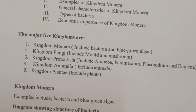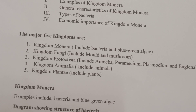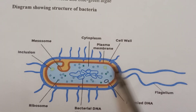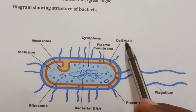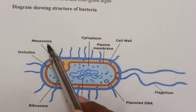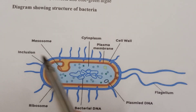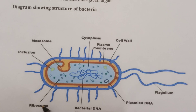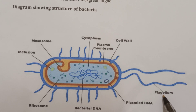Kingdom Monera — examples are bacteria and blue-green algae. This is a diagram showing bacteria. You can see the cytoplasm, the cell wall, the plasma membrane, the mesosome, the inclusions, the ribosomes, the bacterial DNA which is the chromosomal DNA, the plasmid DNA, and the flagellum, which is for locomotory structures.